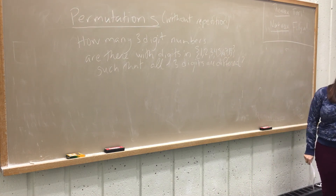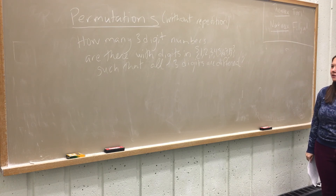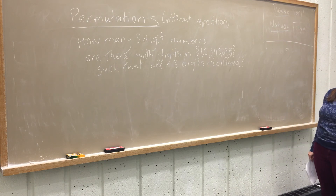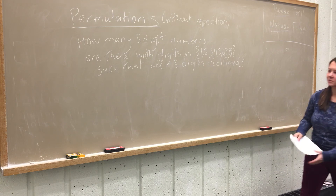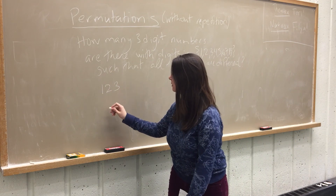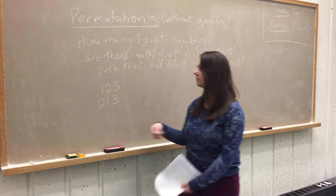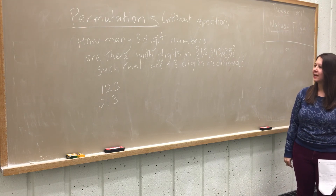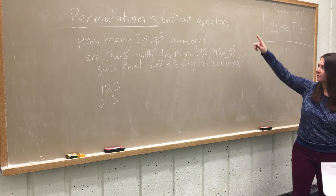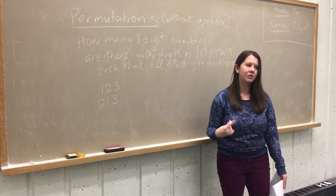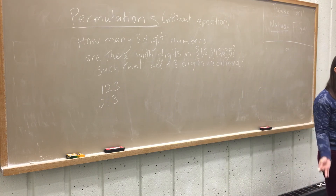We mean three-digit numbers with digits in one through nine, so no zeros. The order matters — 123 is a different number than 213. And without repetition means all the digits are different, so we can't have something like 331 where three is used twice.